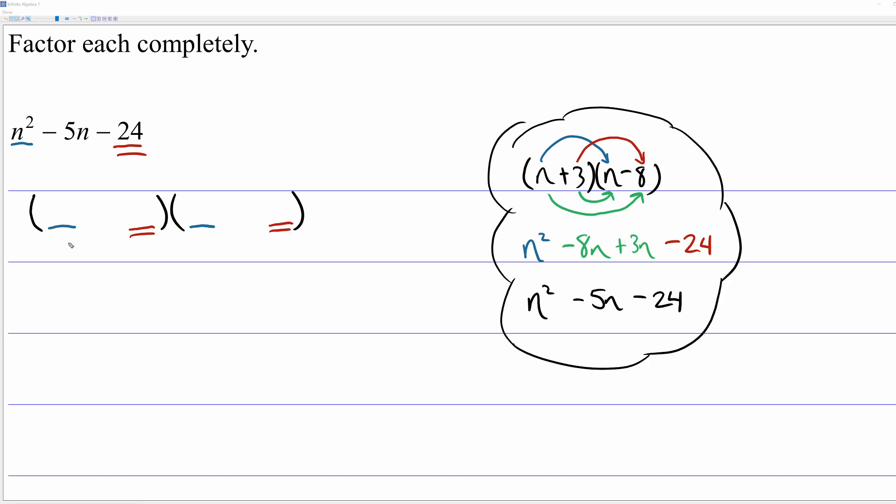So this blue blank multiplied by this blue blank has to be n squared. Remember, these factors are linear, so they're both first power, which means there's only one possibility, n times n. And now for the red blanks, they have to multiply together to give me negative 24. So unfortunately, there's lots of possibilities. There are lots of factor pairs that multiply to give you negative 24.